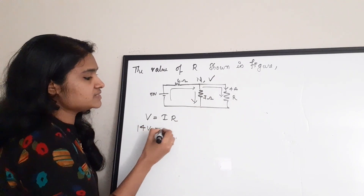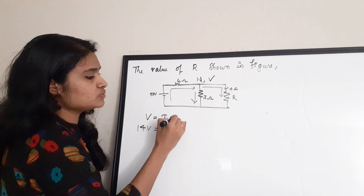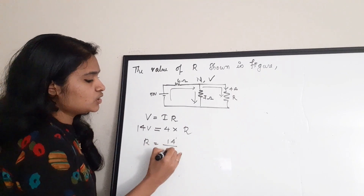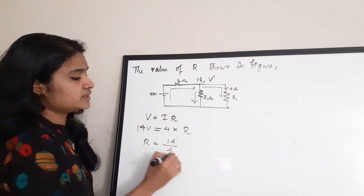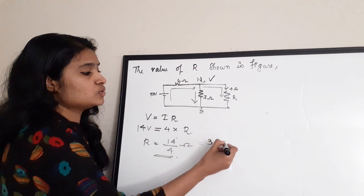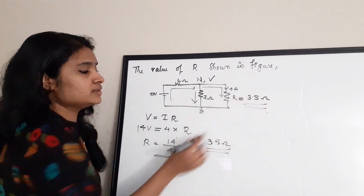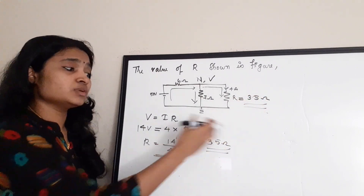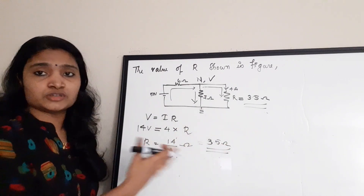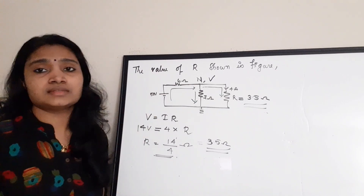Since V = 14 volts and I = 4 ampere, R = V/I = 14/4 = 3.5 ohms. So the value of resistance R is 3.5 ohms.